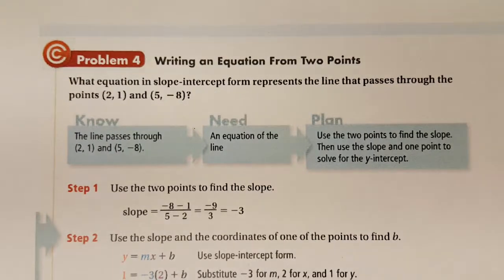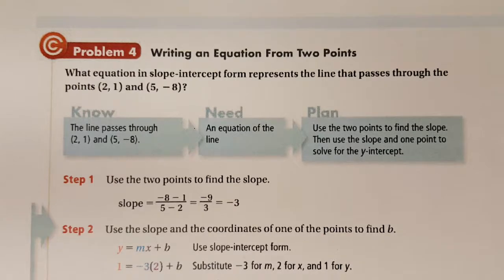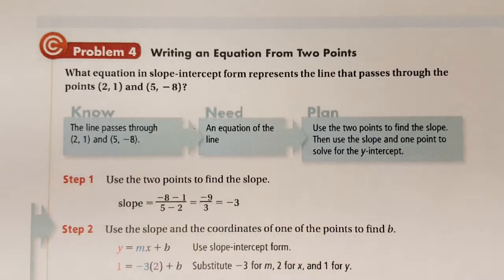Okay, problem number four. Now this is probably going to be the most tedious problem, but it's really not that difficult. You just need to be really methodical in your moves. So this is like the worst case scenario. You're trying to make a slope intercept equation and all they give you is two corner points.